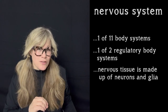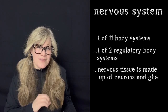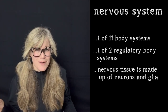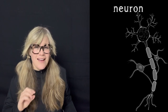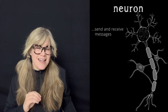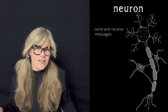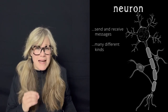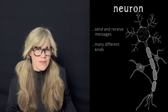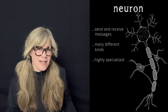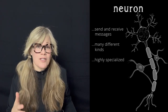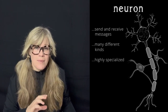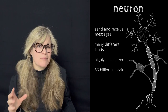Nervous system tissue is made up of particular types of cells. The ones we hear about the most are the stars of today's episode: neurons. Neurons are special because they send and receive chemical and electrical messages, signaling to the body and brain to take some kind of action. There are many different kinds of neurons throughout the nervous system, and they are highly specialized, meaning they carry out functions specific to their type. The adult human nervous system has somewhere around 86 billion neurons in the brain.